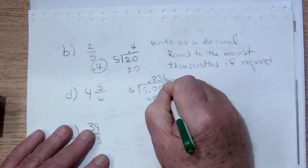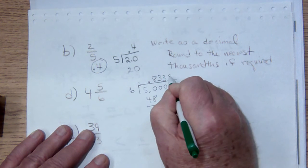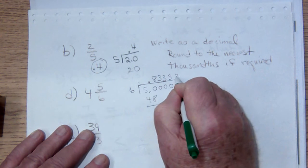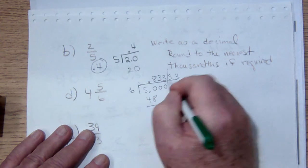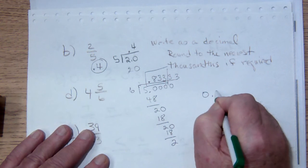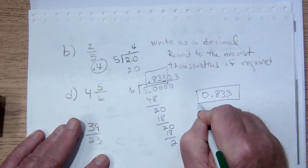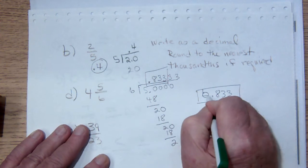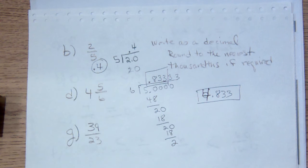We bring down the 0, and we're going to get 3 again. And we'll continue getting 3 off into the future. So if we round to the nearest thousandths, that's going to be 0.833 as a final answer. Actually, it's 4 and 0.833.